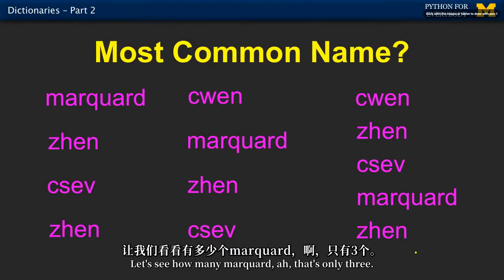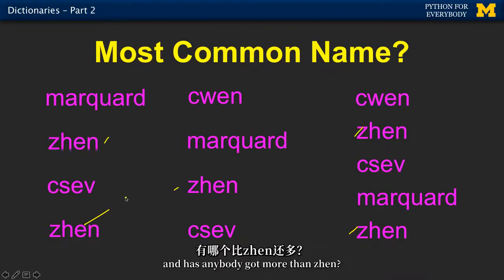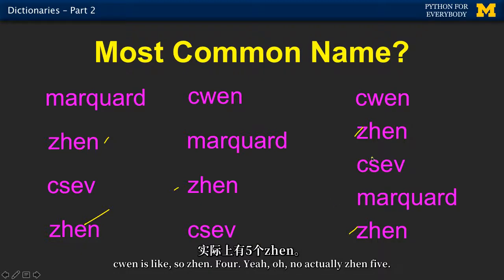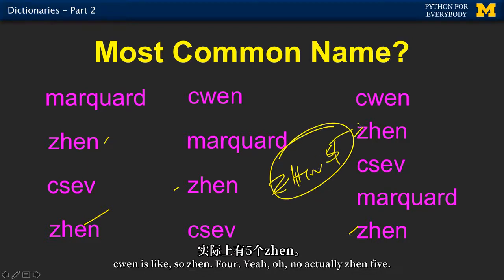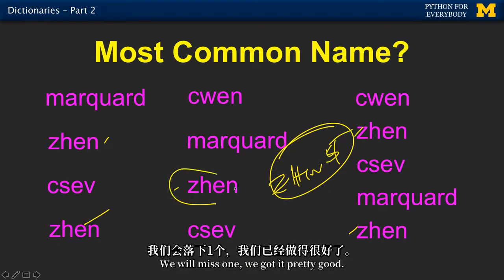Marquod — that's only three. Jen looks like a lot. Jen is one, two, three, four, five. Has anybody got more than Jen? Jen is like... no. So Jen — four... oh no, actually Jen five. That's another problem we humans have — we will miss one.